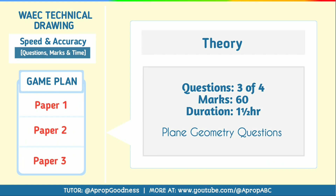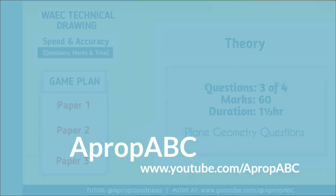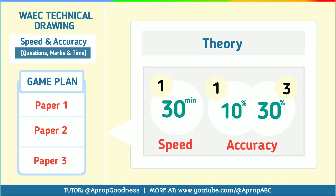Moving to Paper 2, which is theory: you answer 3 questions out of 4, and you have one and a half hours. These questions are based on plane geometry. On speed and accuracy, you must be as fast as 30 minutes per question. If you are accurate, you get 10% for one question, and for three questions that is 30%. So Paper 2 is worth 30%.